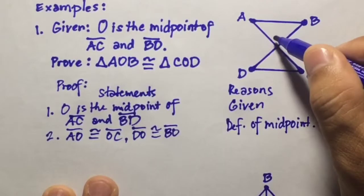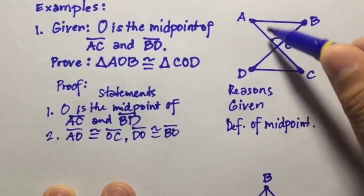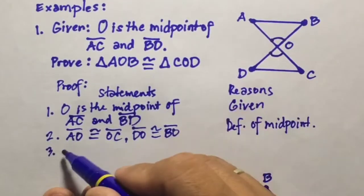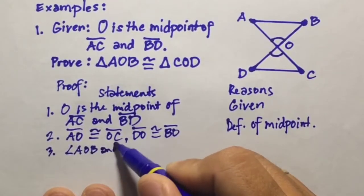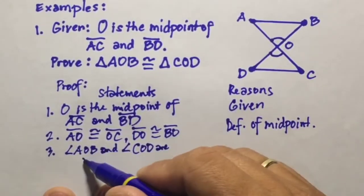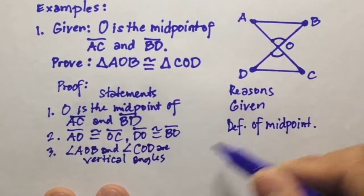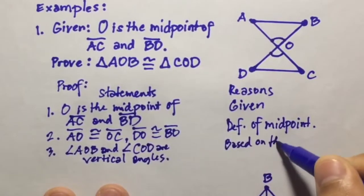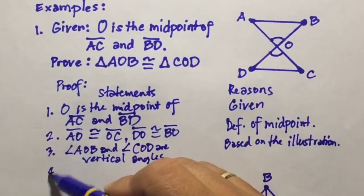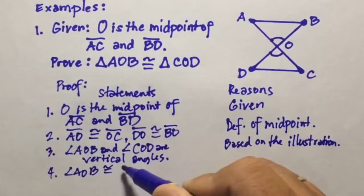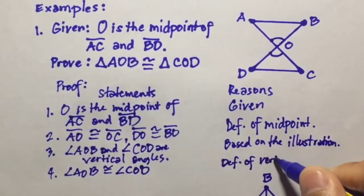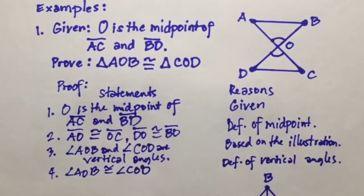Now these two angles — angle AOB and angle COD — are vertical angles based on the illustration. Since they are vertical angles, this means they are congruent. So we can write: angle AOB is congruent to angle COD. The reason here is the definition of vertical angles, or 'vertical angles are congruent.'